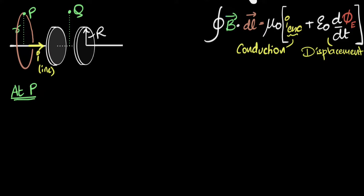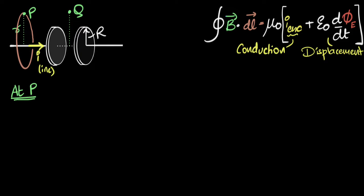Next, we walk across that loop and calculate B·dL. First, we must choose a direction. Since the current is to the right, by the right-hand thumb rule — thumb pointing right, fingers curl around — the magnetic field circulates in this direction, coming out of the screen. We walk in that same direction so that B and dL are parallel, and B·dL simply becomes BdL.